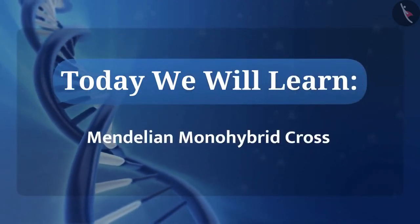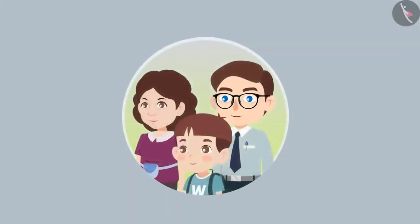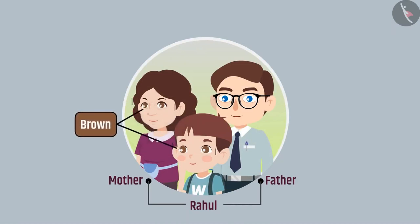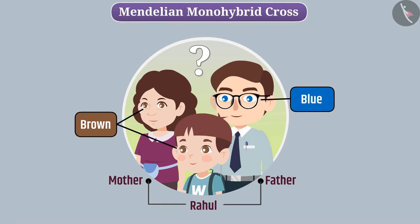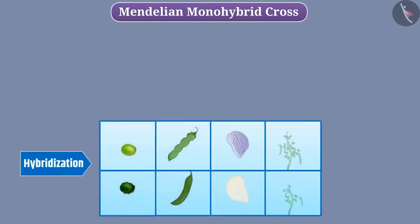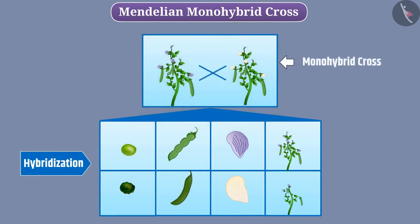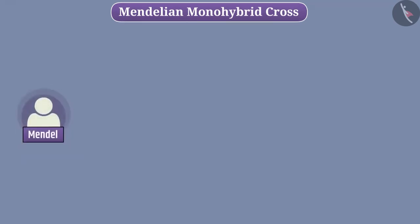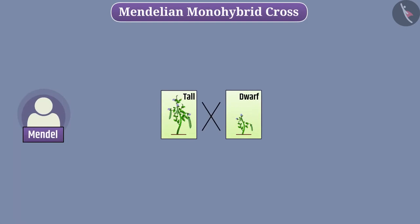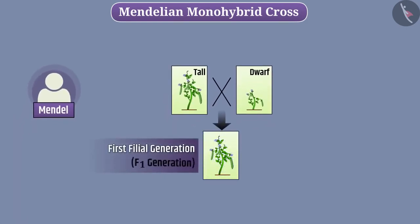We will learn Mendelian monohybrid cross. Rahul and Rahul's mother have brown eyes while his father has blue eyes. We get the answer for why Rahul's eye colour is not blue with the help of Mendelian monohybrid cross. The tallness and dwarfness are contrasting characters for height. Mendel hybridized a tall plant with a dwarf plant and produced the F1 generation from the seeds obtained. All the plants of this generation were tall.